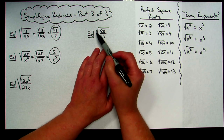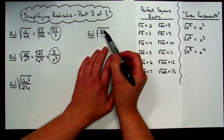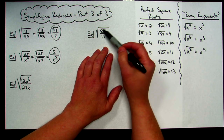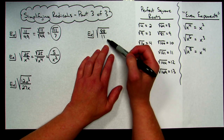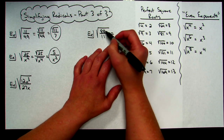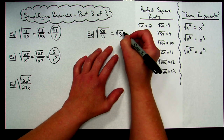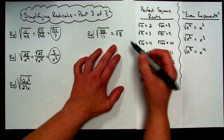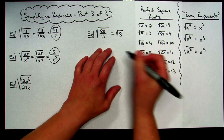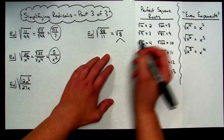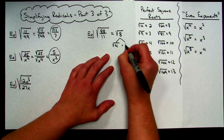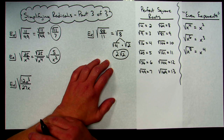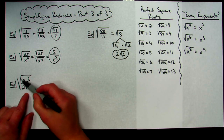Next example: square root of 88 over 11. Neither 88 nor 11 are perfect squares, but I can divide: 88 divided by 11 is 8. So this simplifies to square root of 8. I can't assume I'm done — I check if it simplifies further. 4 goes into 8: 4 times 2 is 8. So I break it into square root of 4 times square root of 2. Square root of 4 is 2, square root of 2 stays. Answer: 2 square root of 2.